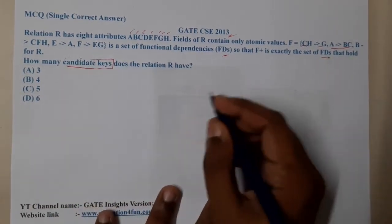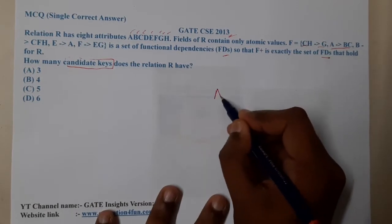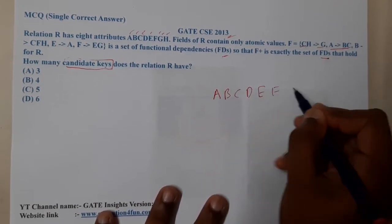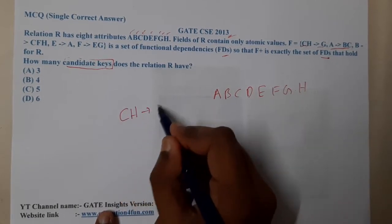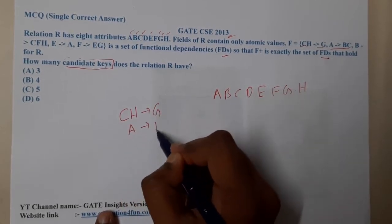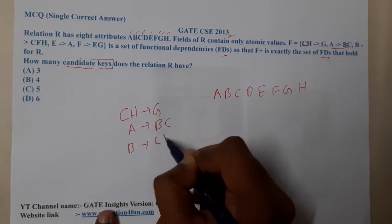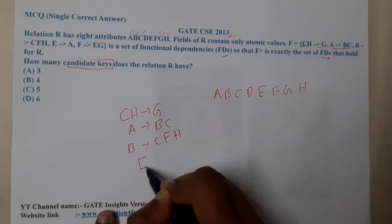Let us start. The variables are A, B, C, D, E, F, G, and H. The dependencies are: CH implies AG, A implies BC, B implies CFH, E implies A, F implies E and G.